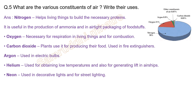Next question: what are the various constituents of air? Write their uses. Nitrogen helps living things build necessary proteins and is useful in the production of ammonia and airtight packaging of food stores. Oxygen is necessary for respiration in living things and for combustion. Carbon dioxide is used by plants for producing food and in fire extinguishers. Argon is used in electric bulbs. Helium is used for obtaining low temperatures and for generating lift in airships. Neon is used in decorative lights and for street lighting.